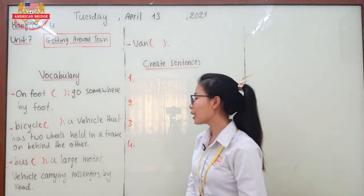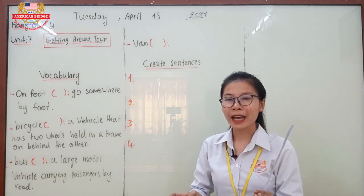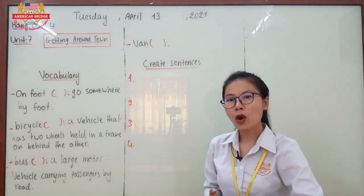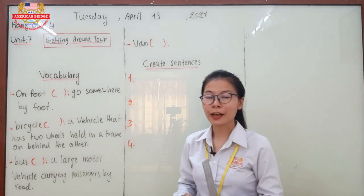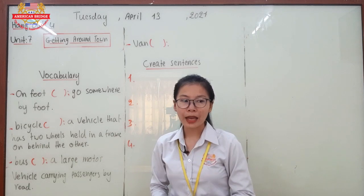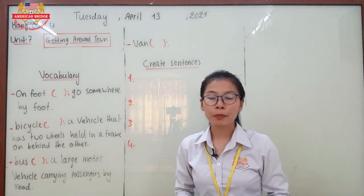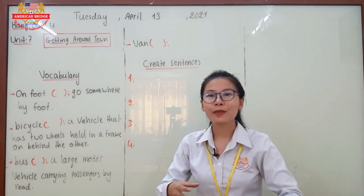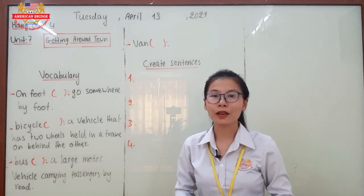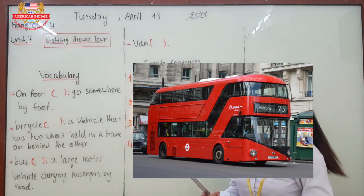Next is bus. A bus is a large motor vehicle that carries passengers by road. A taxi can carry around three or four passengers, but a bus can carry a lot of passengers and is bigger than a taxi. For example, people who want to travel from the province to Phnom Penh prefer the bus because it can carry many people and is bigger than a van or car.